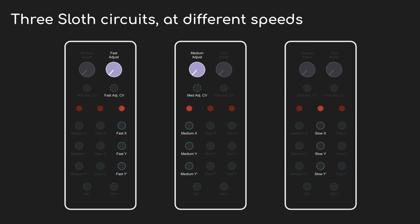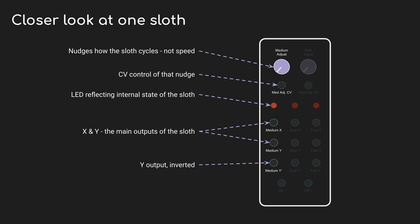Coming back to the Triple Sloth module, there's really only one difference between the three sloths — they're all the same circuit, just running at different speeds. They all output what they label as X, Y, and Z, though I've changed that labeling to better explain what's happening. X and Y are different, but Z is just the inverted Y output. As the sloth cycles around, its state is reflected in the LED as it changes colors and brightness. For the fast and medium sloths, there's also some control via knob or CV input. It's really important to remember that changing this is unlikely to make a big, noticeable change — it doesn't change how fast the sloth runs, it just nudges how it cycles over time. Often what I do is use one sloth to modulate another.